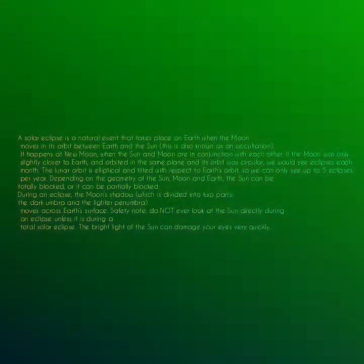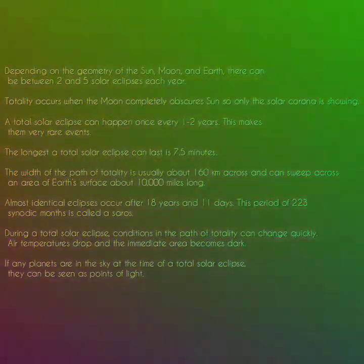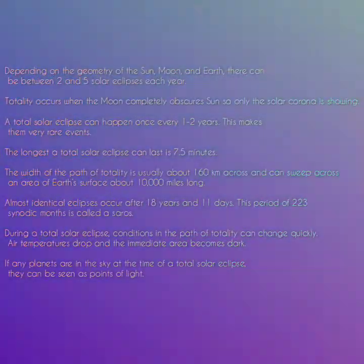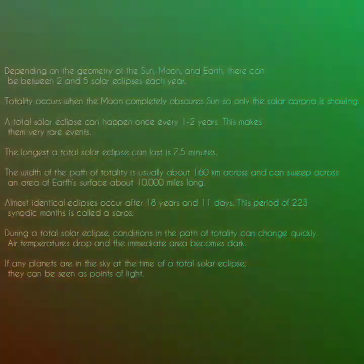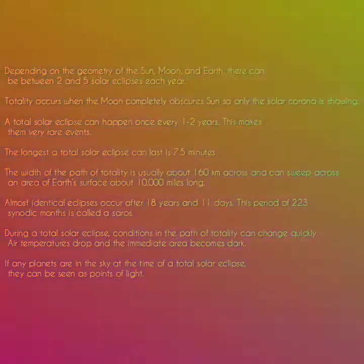Safety note: do not ever look at the sun directly during an eclipse unless it is during a total solar eclipse. The bright light of the sun can damage your eyes very quickly. Depending on the geometry of the sun, moon, and earth, there can be between two and five solar eclipses each year. Totality occurs when the moon completely obscures the sun so only the solar corona is showing. A total solar eclipse can happen once every one to two years, making them very rare events. The longest a total solar eclipse can last is 7.5 minutes.